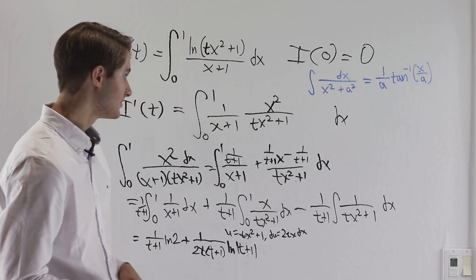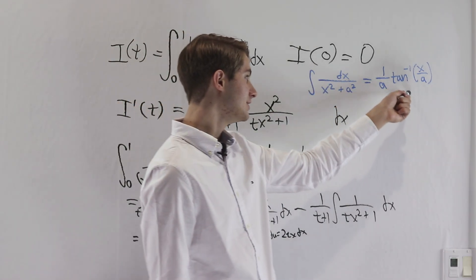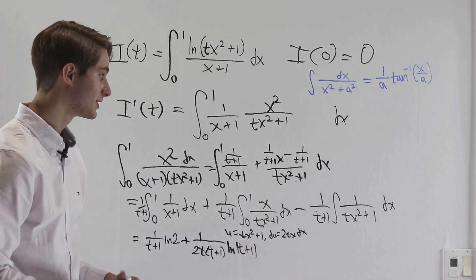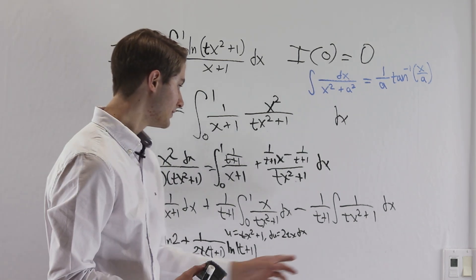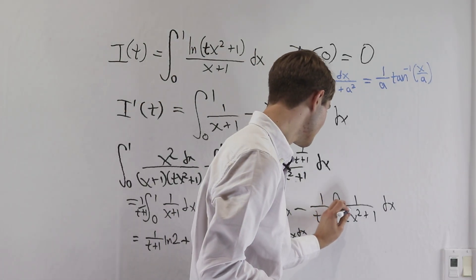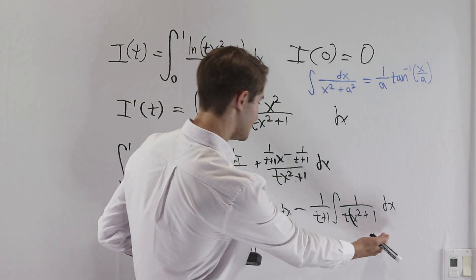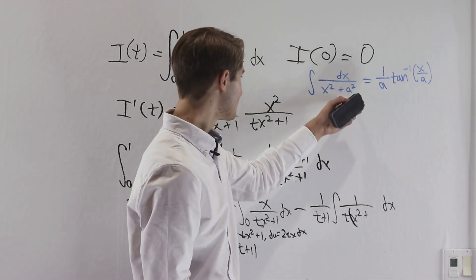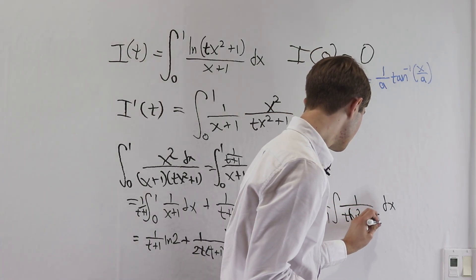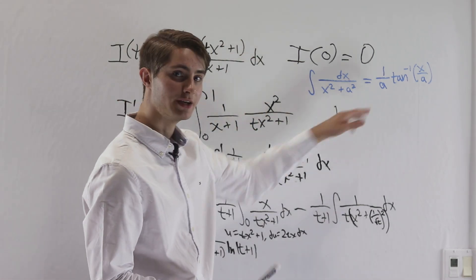For the third integral, we use the fact that the integral of dx over x squared plus a squared equals 1 over a times the inverse tangent of x over a. Our integral isn't quite in that form, so we factor out t from t x squared plus 1 to get t times (x squared plus 1 over square root of t squared). Now it matches the required form.